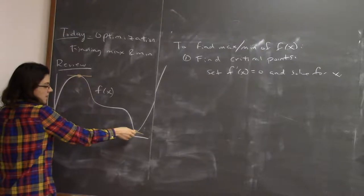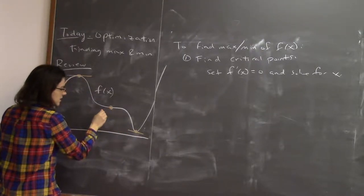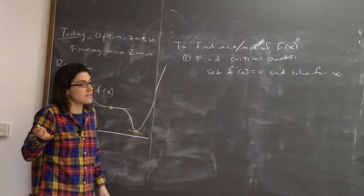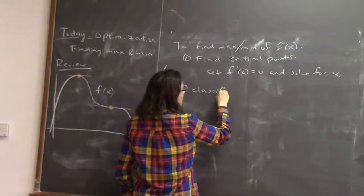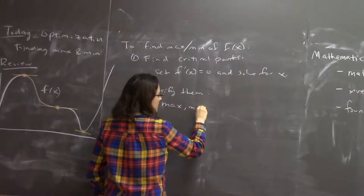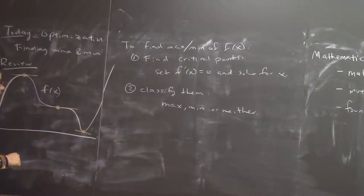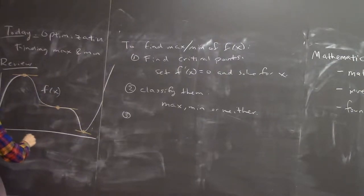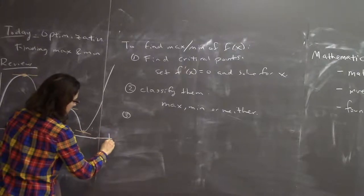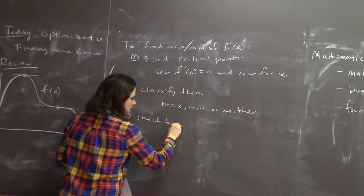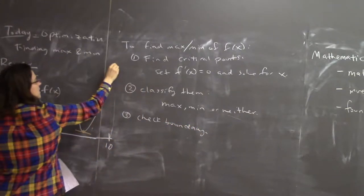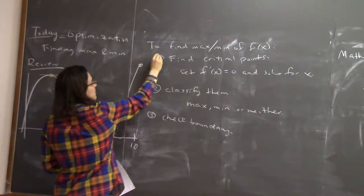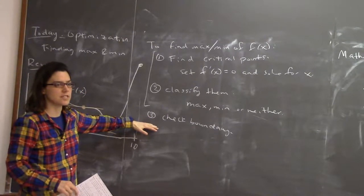Also, there are other points where the slope is zero — like at a horizontal inflection point. So you find critical points, and then you classify them as a max, a min, or neither. Thirdly, if you're optimizing on a constrained domain — say I'm interested in this function from zero to ten — you might have to check the boundary points, because a boundary point could be higher than any interior critical point even though the slope isn't zero there. Today we'll push these ideas into higher dimensions, and next time we'll talk about constrained regions and what to do with the boundary.